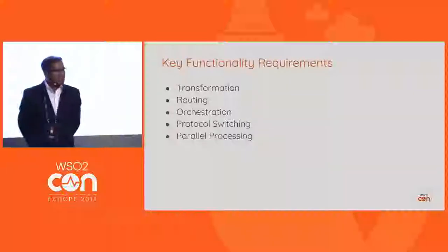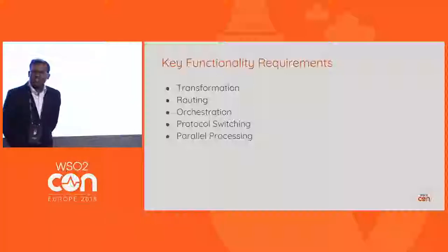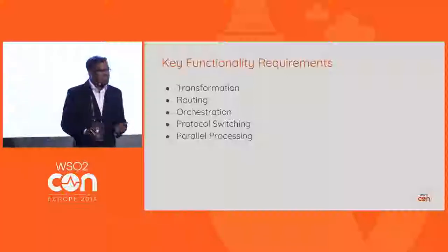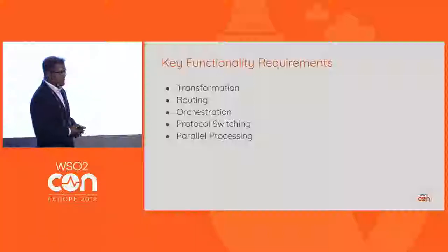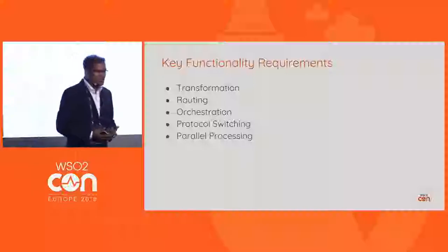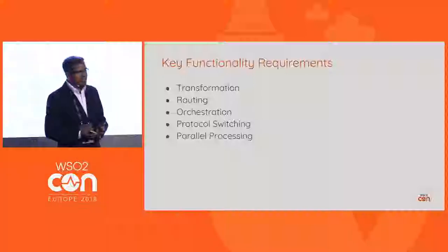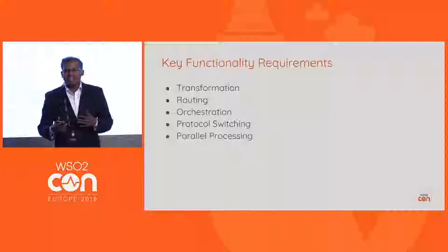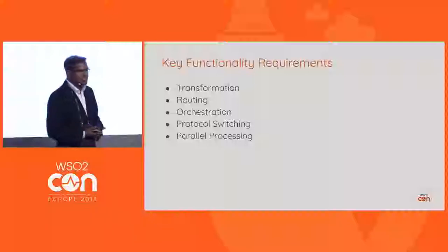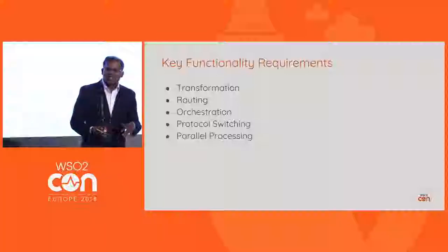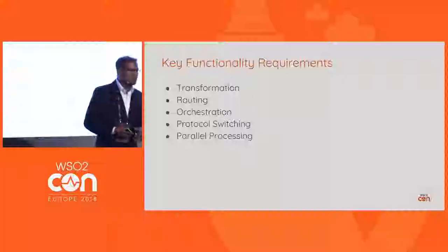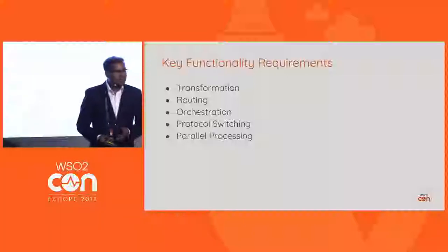So what are the key functional requirements that we need in order to implement a brownfield integration project? The first one is the ability to perform transformations, and then routing and the ability to orchestrate services, protocol switching capabilities, and then parallel processing. These are some of the key functionalities that we may need to implement a brownfield integration.